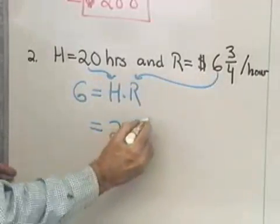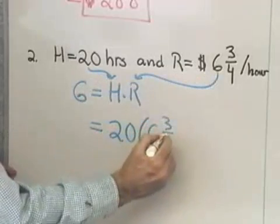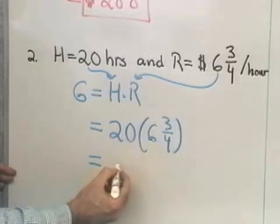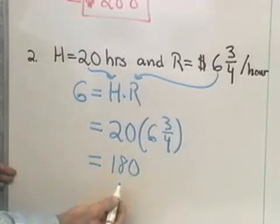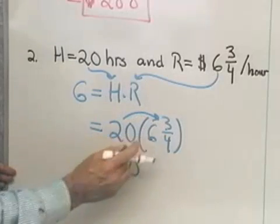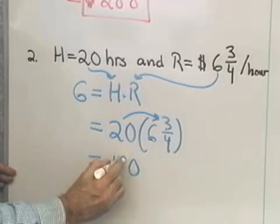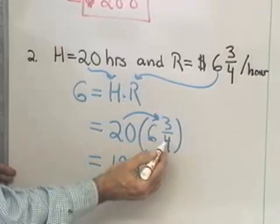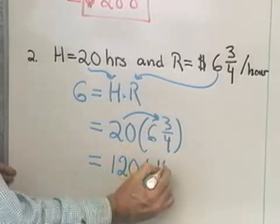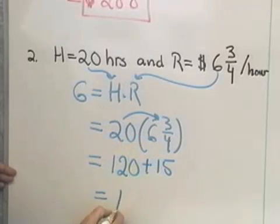20 times 6 and 3 quarters, 20 times 6, 120. And then 20 times 3 quarters, 4 divides into 20 5 times, times 3 is 15. So this comes out to be 135.